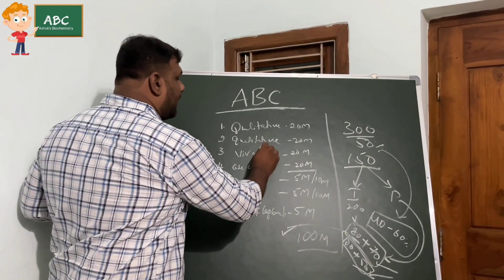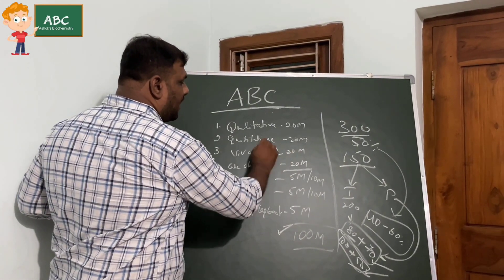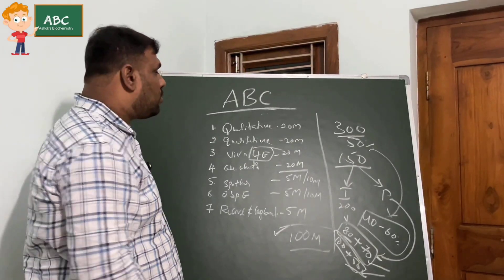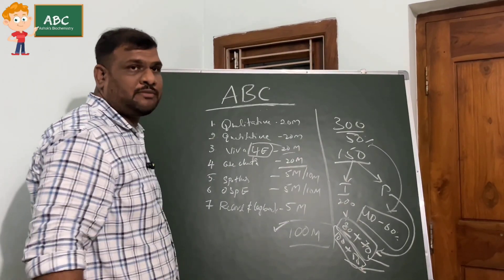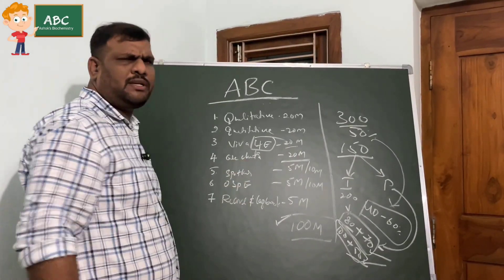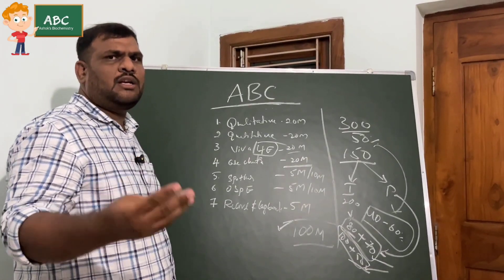Your viva - where you're having four examiners, two internals and two externals - carries 20 marks. Then case charts - some colleges will give you two charts, some colleges will give you four charts - you're going to get 20 marks for them.